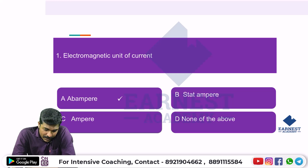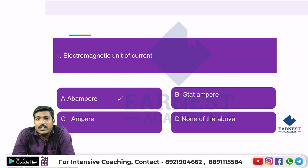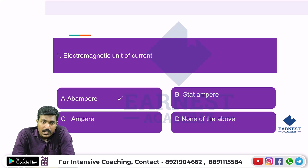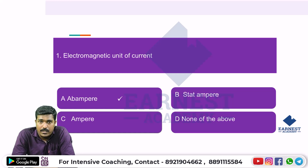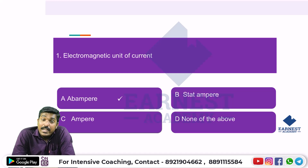First question: the electromagnetic unit of current. The fundamental unit of current is the ampere. EMU and ESU are used as electromagnetic and electrostatic units of current. The electromagnetic unit of current is the ab-Ampere, and the electrostatic unit of current is the stat-Ampere.